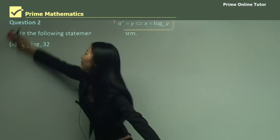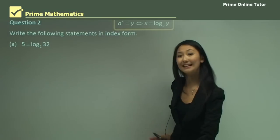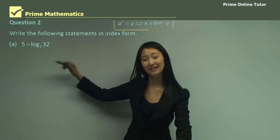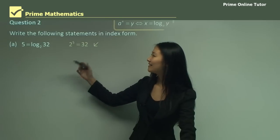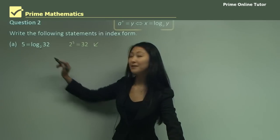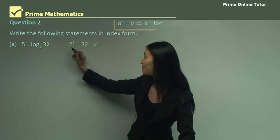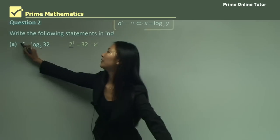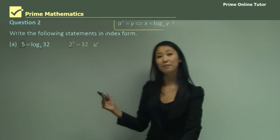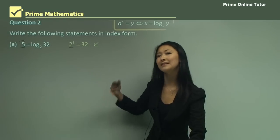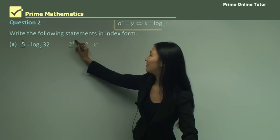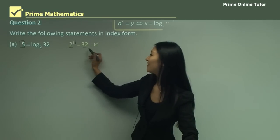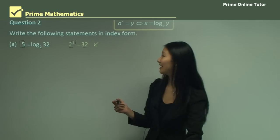In question 2, we want to write the following statements in index form. The first one: 5 equals log base 2, 32. The base is 2, so it becomes the base of the index. Since the log equals 5, that becomes the index. Then 32 moves over, giving us 2 to the power of 5 equals 32.